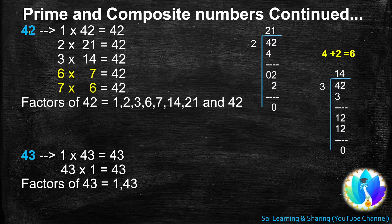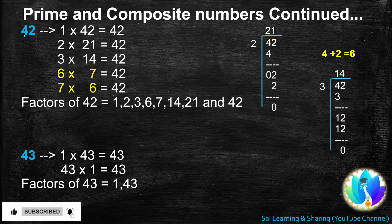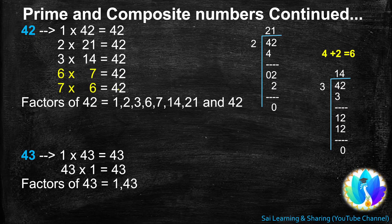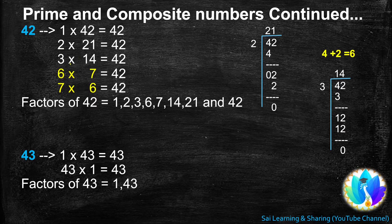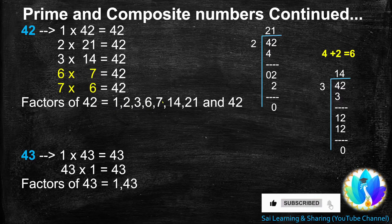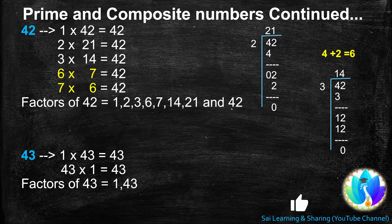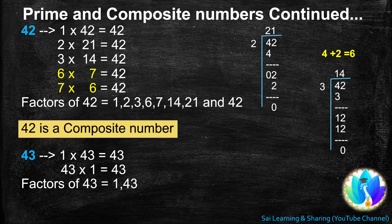42 is not a multiple of 4 or 5. But 42 is a multiple of 6, which is 6s are 7, 42. 42 is a multiple of 7, which is 7s are 6, 42. Now we got all the factors of 42 because 6 and 7 have occurred earlier. The factors of 42 are: 1, 2, 3, 6, 7, 14, 21, and 42. A number that gets more than 2 factors is a composite number. So, 42 is a composite number.